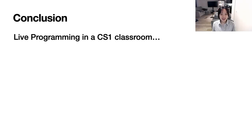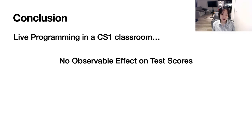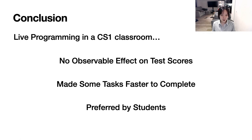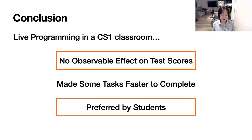In conclusion, we conducted a study where students used a live programming environment called projection boxes in a natural classroom setting and explored its impact. While we found that projection boxes had no observable effect on test scores, we found that students completed some tasks faster using projection boxes. We also found that students rated the live programming environment as preferable and more helpful for their learning. We recognized that students' perceptions of the tool did not match their performance on post-lab tests, so we call for more work to better measure the impact of live programming in CS1 education. Thank you.